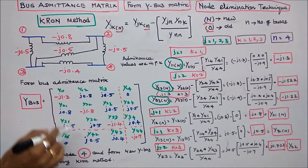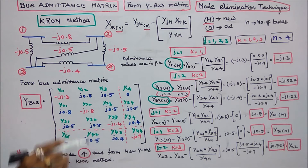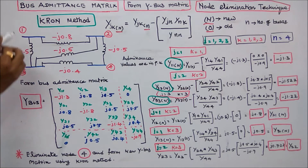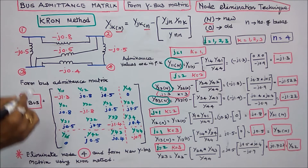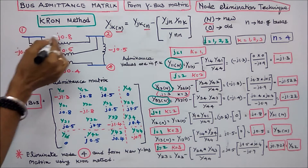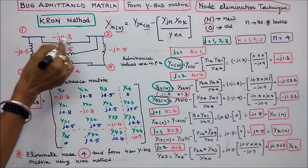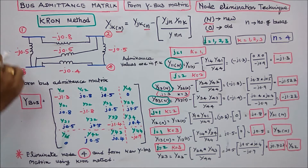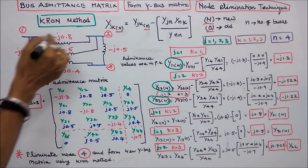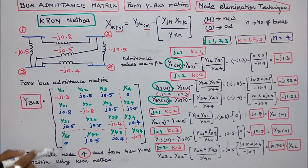The first step is to find the diagonal elements. Y11 is calculated by adding the admittances of the 2 lines connected to bus 1: minus j0.5 plus minus j0.8, giving minus j1.3.